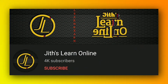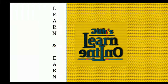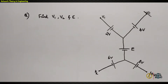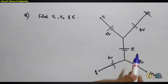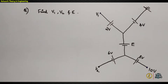The question is: in this circuit we want to find the values of v1, v2, and e. The circuit contains only voltage sources — this is v1, this is v2, and this is e. Since the circuit contains only voltage sources, we can directly apply KVL. We have to find three unknown voltages, so we take loops such that each loop contains one unknown voltage source.